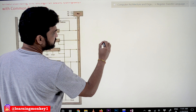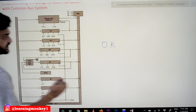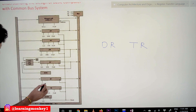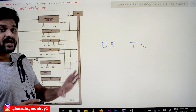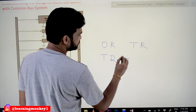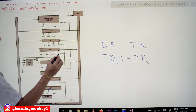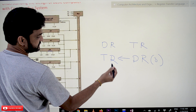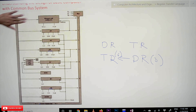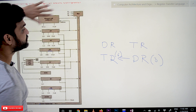For example, if we want to transfer the data from a register called DR to a register called TR: DR has the number 3 and TR has the number 6. The select inputs of the common bus are provided with the binary equivalent of DR's number. The binary equivalent of decimal 3 is 011, so S2, S1, S0 are provided with 011. Whenever 011 is provided to the select lines, the content of DR will be transferred onto the common bus.